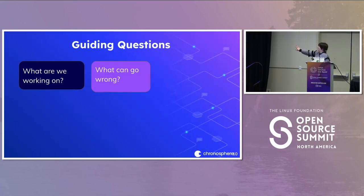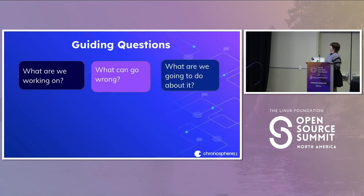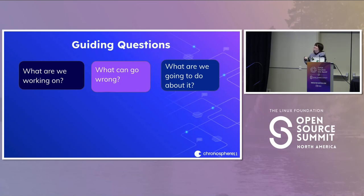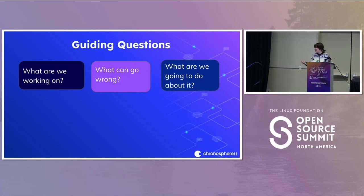My favorite question, especially for those of us that are nervous Nellies: what could go wrong? This is your fun time to list endoscopy equipment, raccoons stealing Reese's from the snack machine. List out all the things, and then look at what are we going to do about it. If someone says, 'What if a meteor hits this AZ?' you ask: what would we be able to do about it? How likely is that? Maybe we want to look at our insecure S3 configuration — that is a little bit more likely to cause a security incident than a meteor taking out an AZ. This question really helps ground the discussion in reality and can avoid rabbit holes.